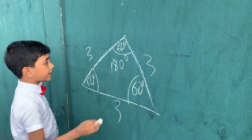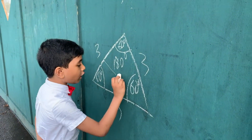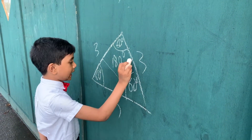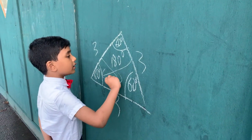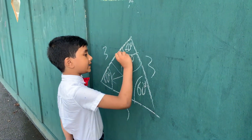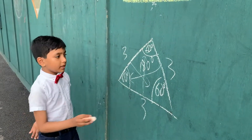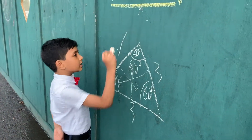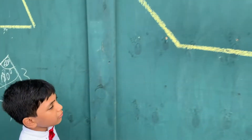Another way to think about this is: since all the sides have the same magnitude and they are adjacent to angles, the angles should have the same magnitude as well.